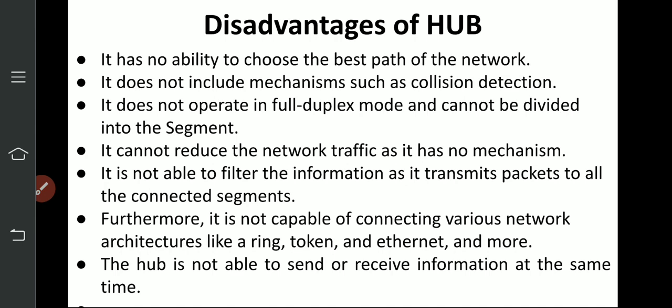It cannot reduce network traffic as it has no mechanism or software for that. It is not able to filter information as it transmits packets to all connected segments — there is no software to send data only to the destination while blocking others. Furthermore, it is not capable of connecting various network architectures like ring, token, and Ethernet. Hub is used in star topology and bus topology.